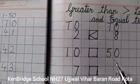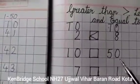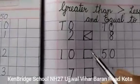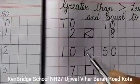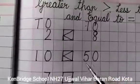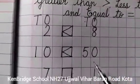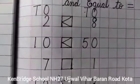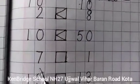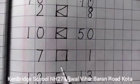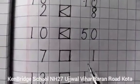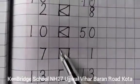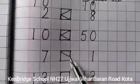So, which is the bigger number? Fifty. So we will open the mouth on the side of fifty, number fifty. Now, next is seven and one. Which is bigger? Number seven.